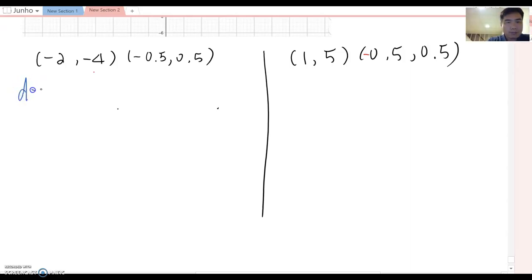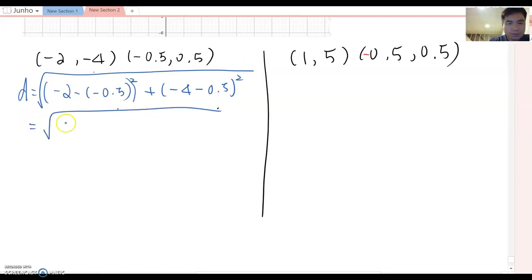So in this case, d equals square root of negative 2 minus negative 0.5 squared plus negative 4 minus 0.5 squared. Of course, don't forget the square root. Then this becomes square root of negative 1.5 squared plus negative 4.5 squared. If you calculate this, it will be square root 22.5 and approximately becomes 4.743 like that.